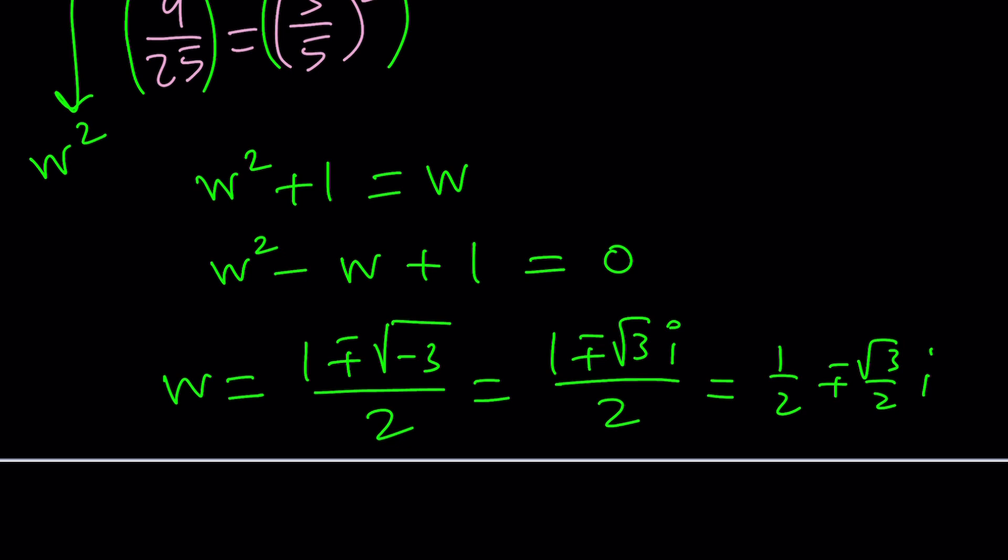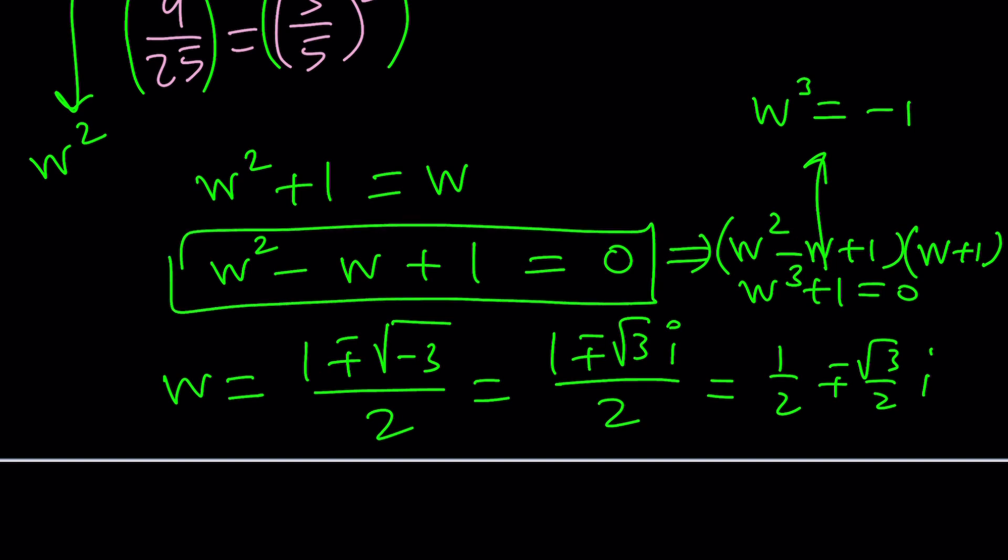because if W squared minus W plus 1 is equal to 0, then you can multiply both sides by W plus 1. And then it'll turn into sum of two cubes, which is also 0. But this means that you are dealing with cube roots of negative 1. Of course, negative 1 is not a solution because it's not a solution of this. It just comes from multiplying both sides by W plus 1.